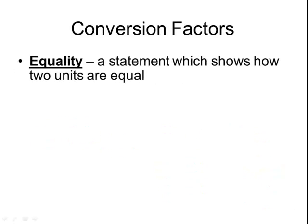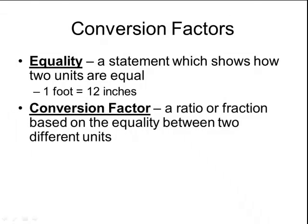Now I can also convert between different units. When you're converting, you use values called equalities. An equality is a statement which shows how two units are equal to each other. For example, 1 foot is equal to 12 inches. And I can write that as a conversion factor, which is like a ratio or a fraction based on the equality between those two different units. So for a foot and 12 inches, I can either write 1 foot over 12 inches, or I can write 12 inches over 1 foot. And those are my two conversion factors for the equality mentioned above.